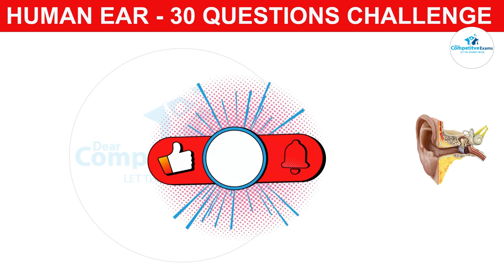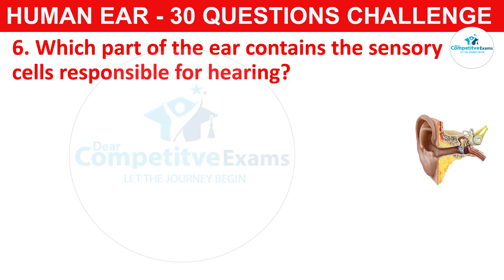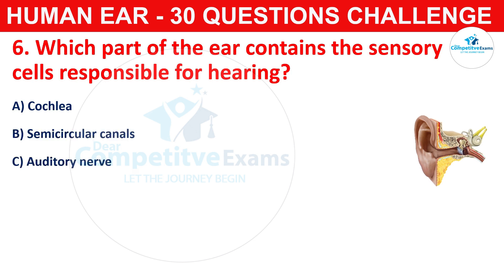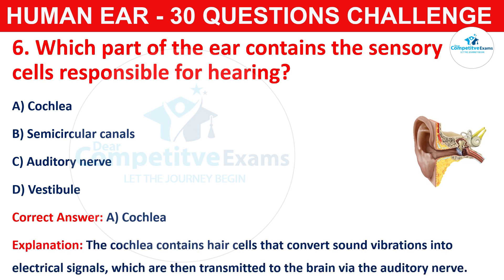Question number six: which part of the ear contains the sensory cells responsible for hearing? Your options are cochlea, semicircular canals, auditory nerve, or vestibule. The correct answer is A, that is cochlea. The cochlea contains hair cells that convert sound vibrations into electrical signals, which are then transmitted to the brain via the auditory nerve.